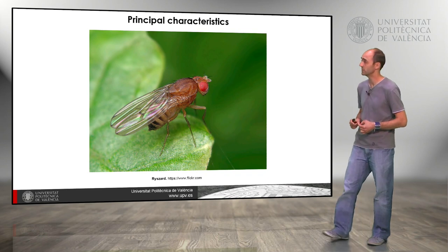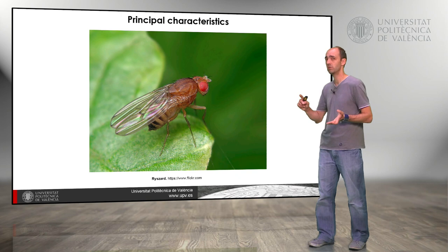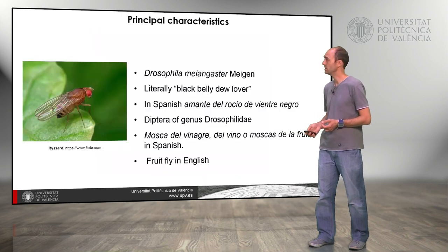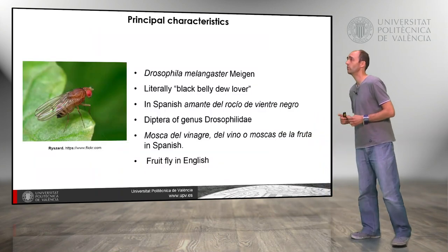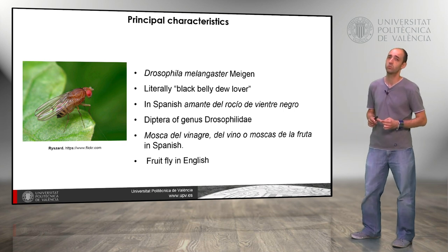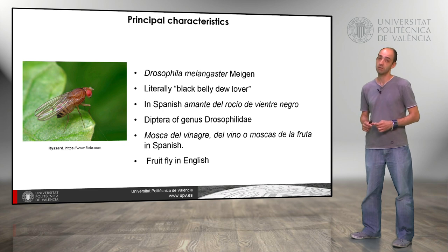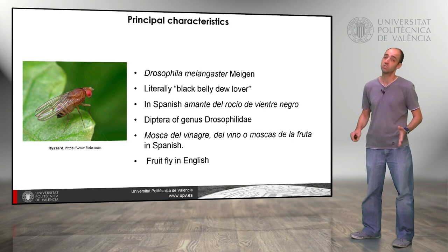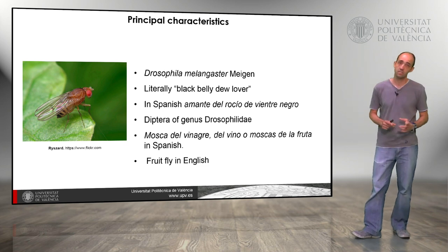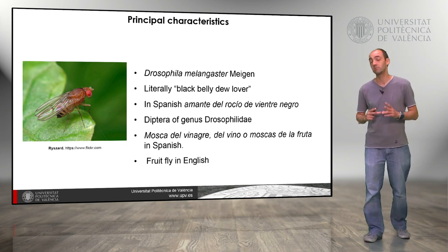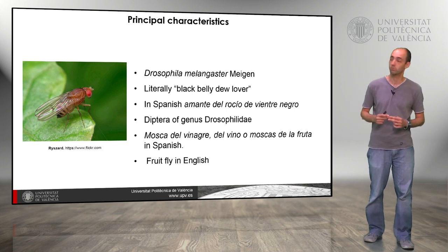We are going to use Drosophila melanogaster — it is an insect. Here you can see in this picture the head, the thorax, the wings, the abdomen and the legs of this insect. The scientific name Drosophila melanogaster literally means black-bellied lover of dew. The English name is fruit fly, and the Spanish name is mosca de vinagre del vino o mosca de la fruta. It is important not to confuse this insect with the Mediterranean fruit fly, which is a pest of orange trees for example.